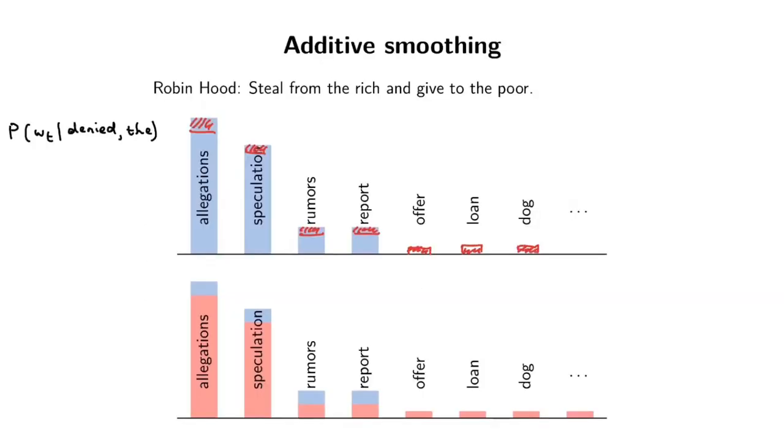This is much closer to the Robin Hood intuition I gave at the start. We're stealing a bit from allegations, speculations, rumors, report. We add up all these red regions into one ball of red mass, then spread that out over all the words that occurred zero times. That's the idea behind absolute discounting.